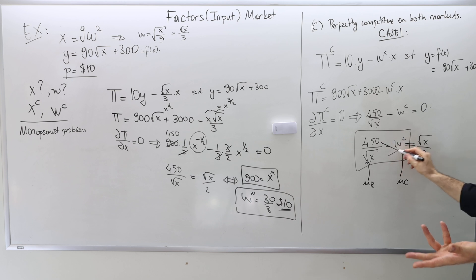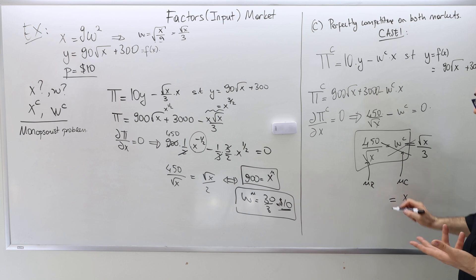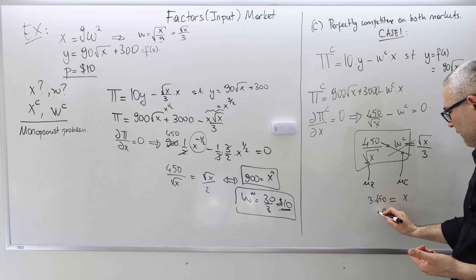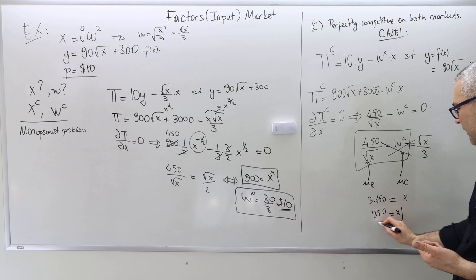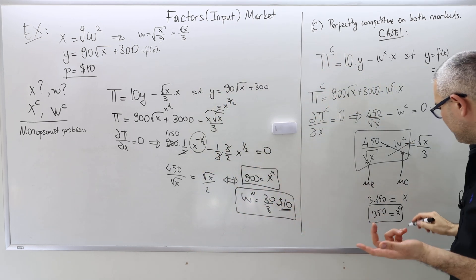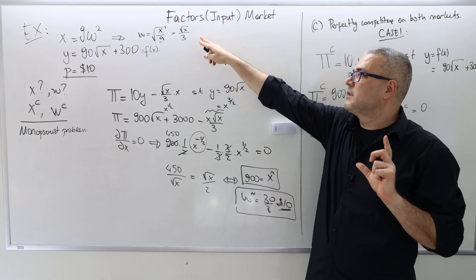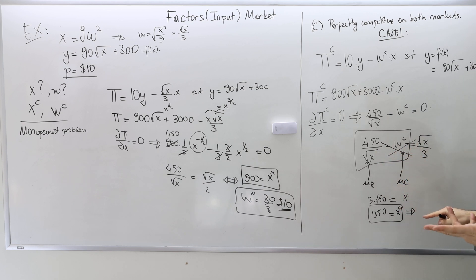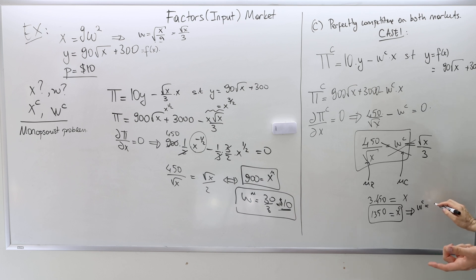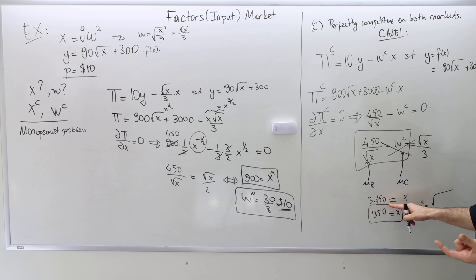Using the supply curve: WC equals the square root of X divided by 3. So equating 450 divided by the square root of X to the square root of X divided by 3, cross-multiplying gives X equals 450 times 3 equals 1350. So the competitive equilibrium labor input is X equals 1350. Plugging back into the supply curve: WC equals the square root of 1350 divided by 3.